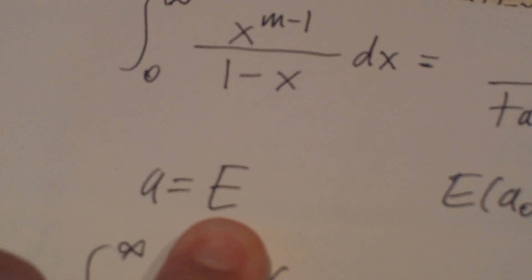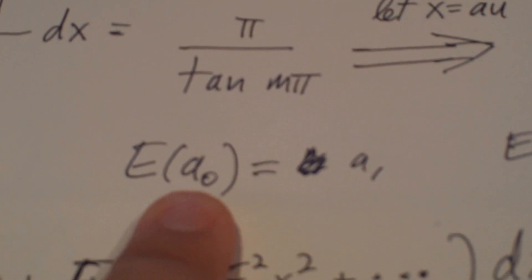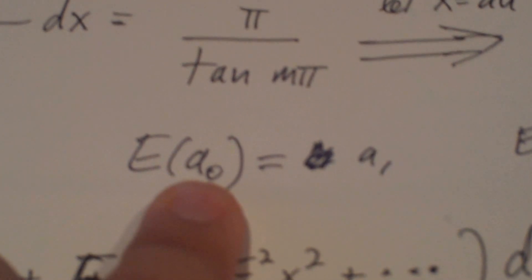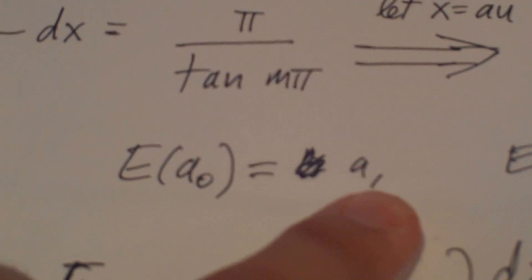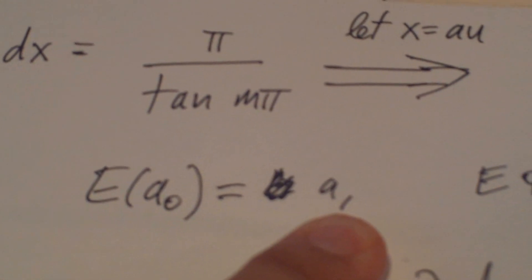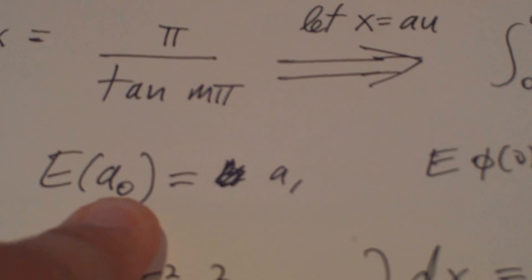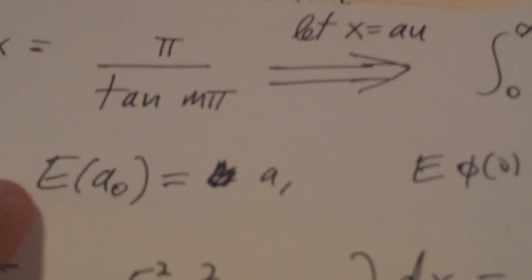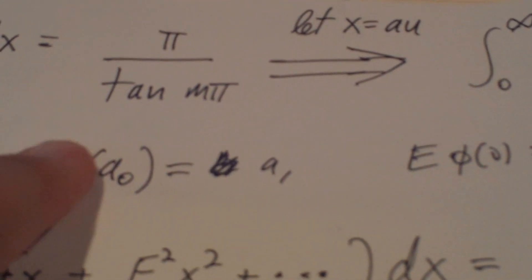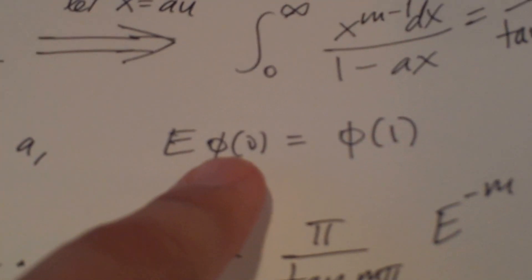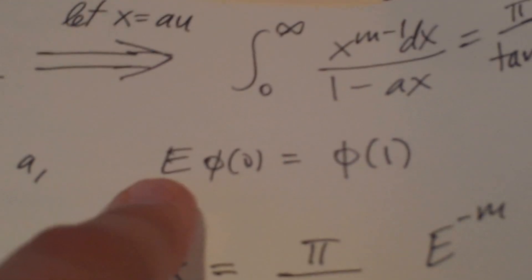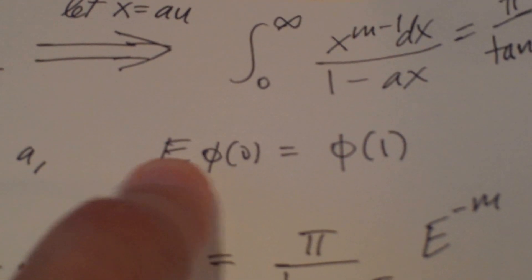So let's let a equal the finite difference operator e. All this e does is: given whatever index you're at from any sequence — say a sub zero — it just moves it forward by one. If you have e squared, it moves it forward by two. So this operator takes a power and moves a sequence forward, or backward if it's negative. The regular rules of algebra apply to this finite difference operator.